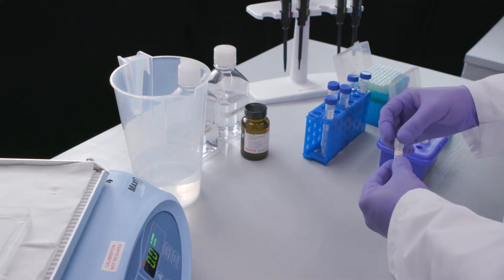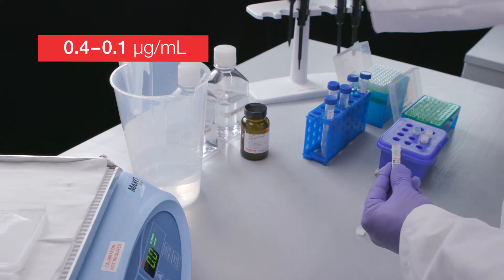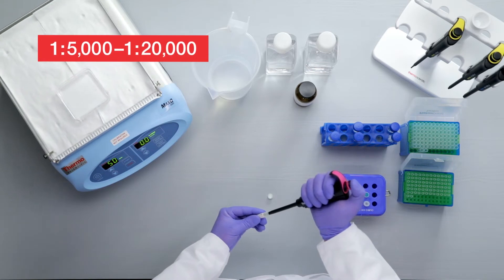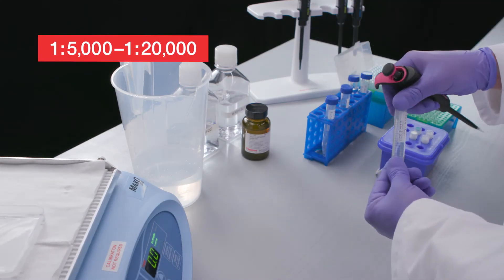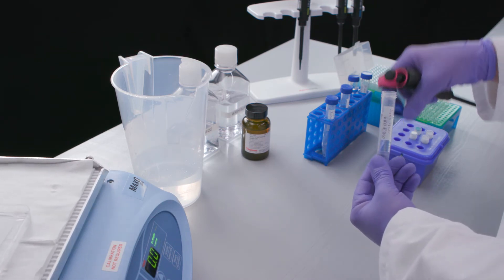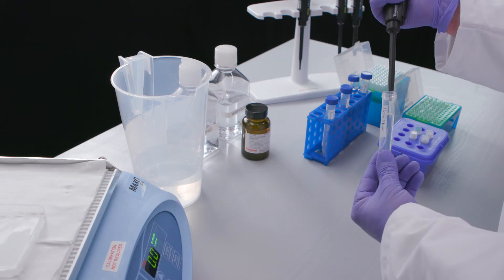Prepare dilutions of the conjugated secondary antibody of 0.04 to 0.1 micrograms per milliliter, or 1 to 5,000 to 1 to 20,000 in an appropriate volume of wash buffer. Alternatively, the secondary antibody can be diluted in blocking buffer. Detergent can now be added if needed.